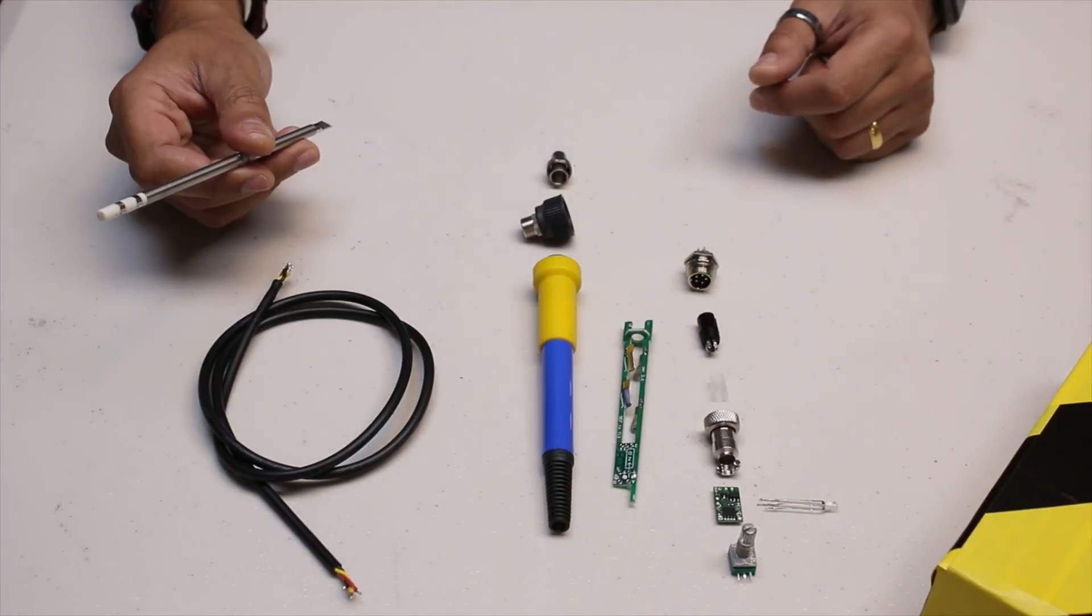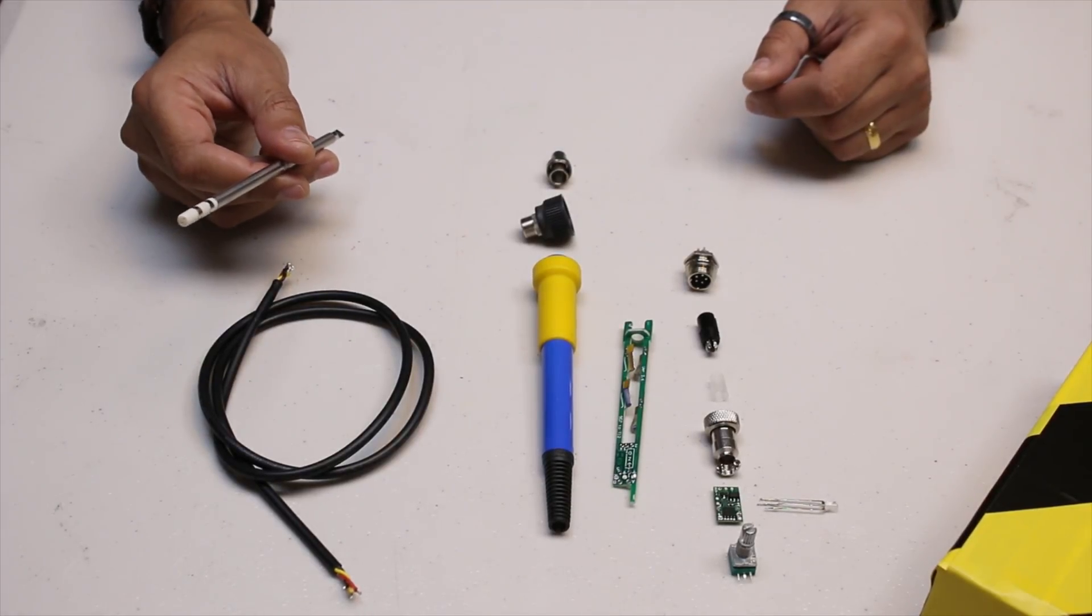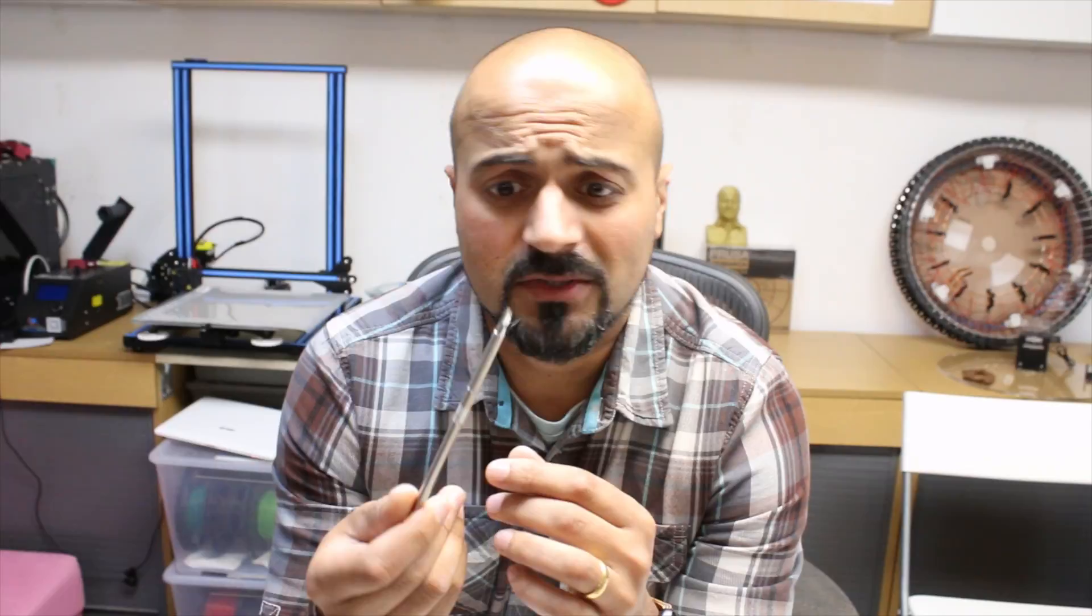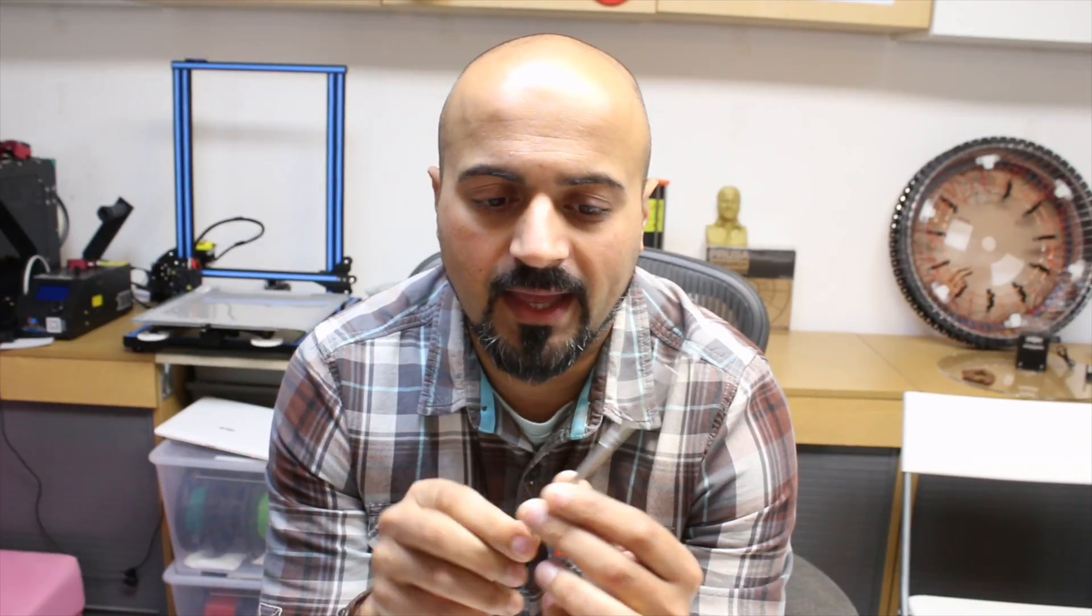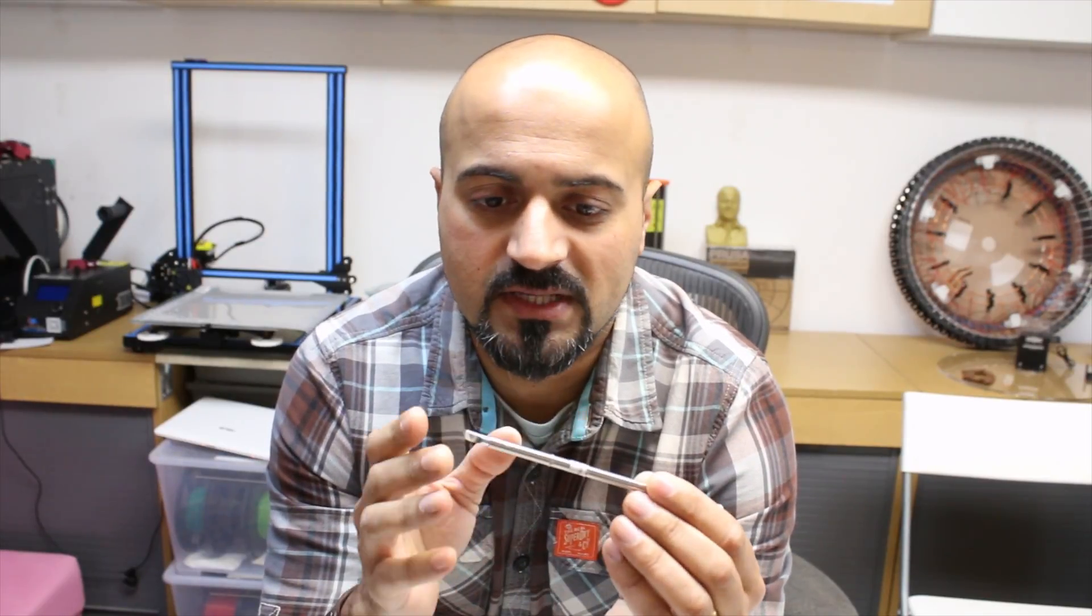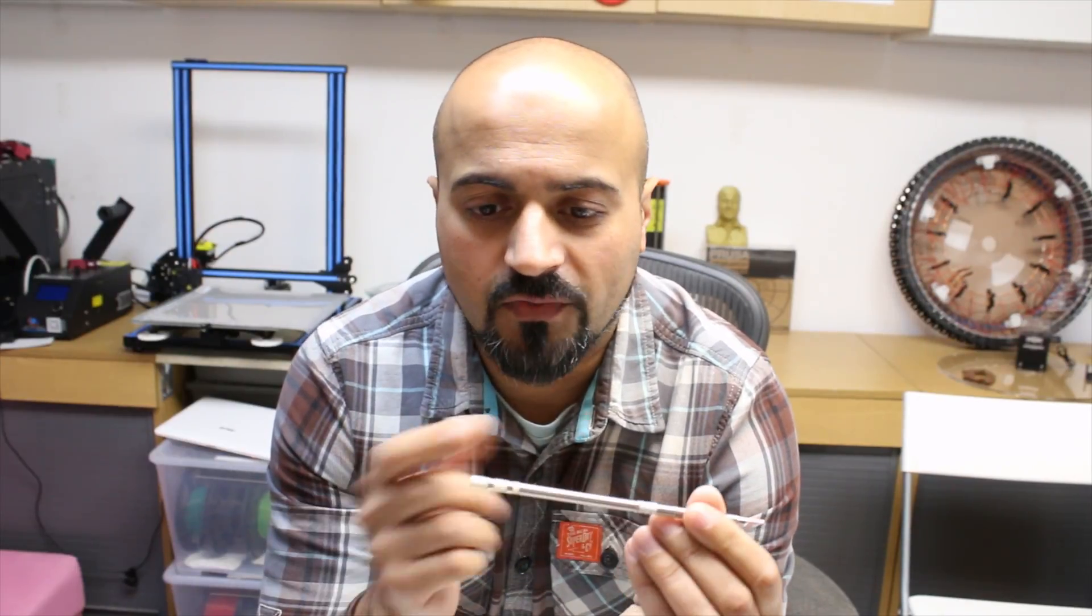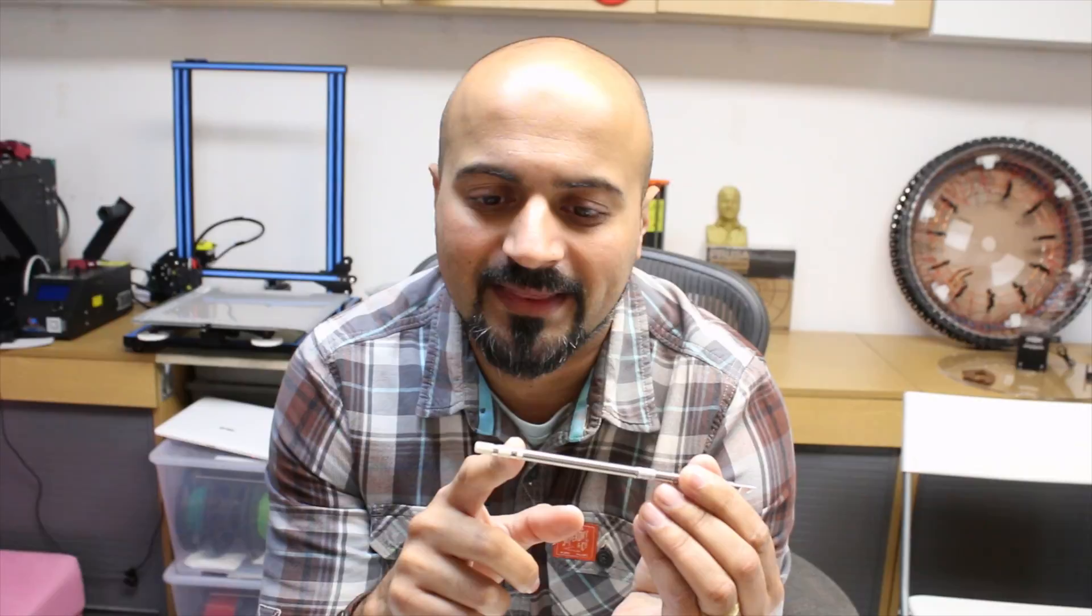So how does the soldering iron work? Well it's basically a glorified resistor. So you put contact on the tip here and you drive current through it. The resistor then resists that current and heats up in that process. So if I was to simply put 24 volts in there and drive 3 amps through this, this should get fairly hot. In fact, let's give it a go and see what happens.